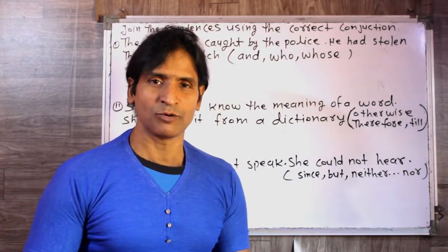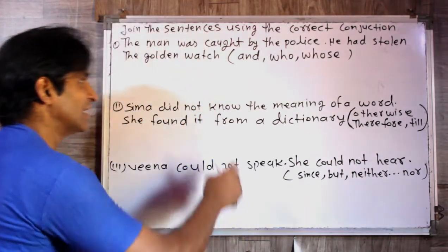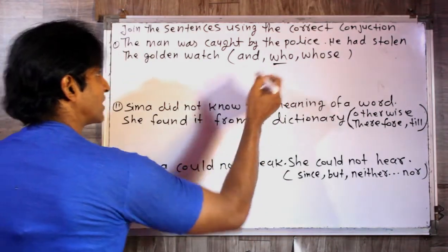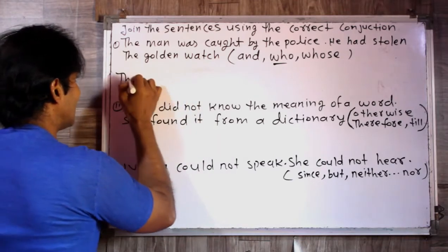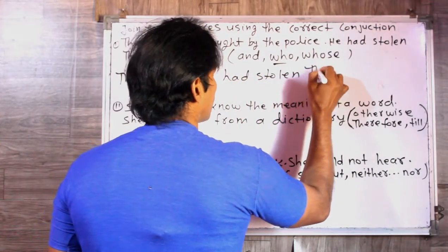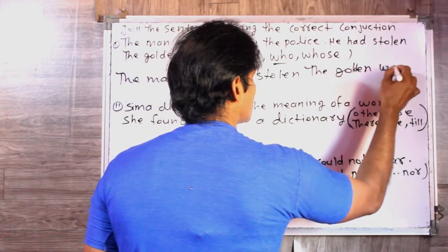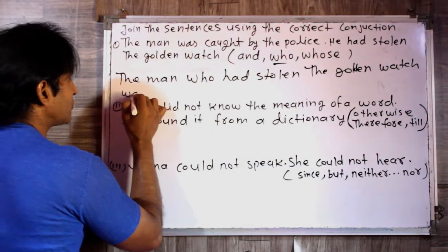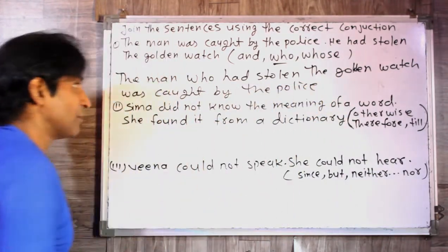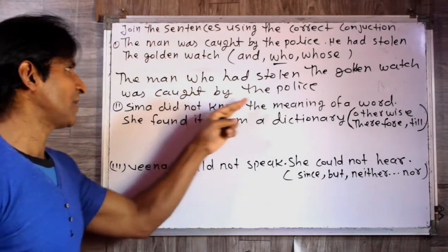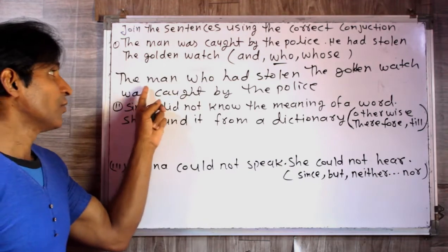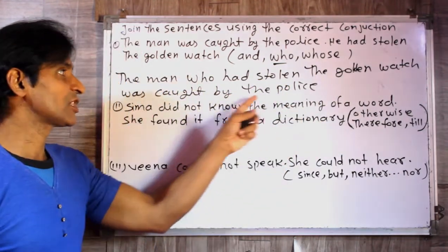अगर इसको हम positively लेंगे तो 'जिसका' और 'जिसके' यह अर्थ होता है. इन तीनों में से न तो 'and' fit रहा है, न 'whose' fit रहा है. अब यहाँ पर हम 'who' लिखेंगे. So the joined sentence is: 'The man and who had stolen the golden watch was caught by the police.' यह एक sentence बन गया — वह आदमी जिसने सोने की घड़ी चुराई थी, पुलिस के द्वारा पकड़ा गया.